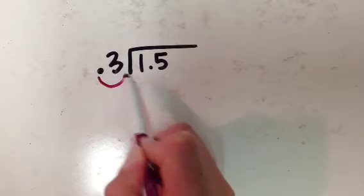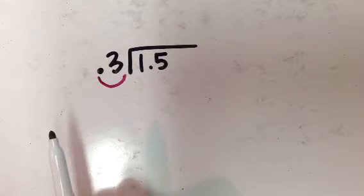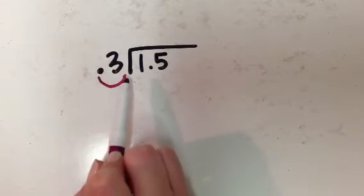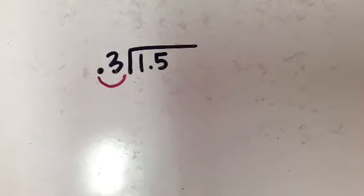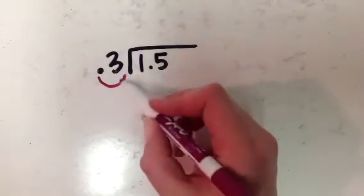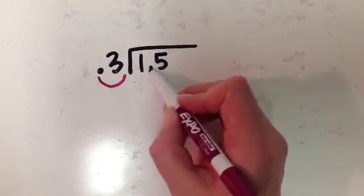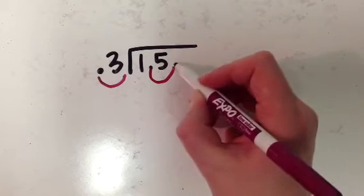So like he said in his video, we're going to move it. We're going to move that decimal over one spot because that's all I've got, it just needs one spot right there. And then, like he was saying, whatever I do to the outside of the bracket I have to do to the inside, so I'm going to move it over there.